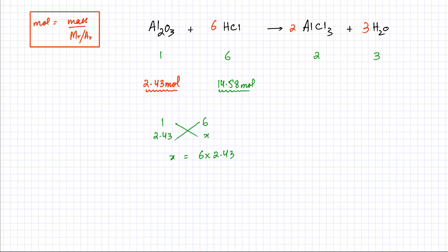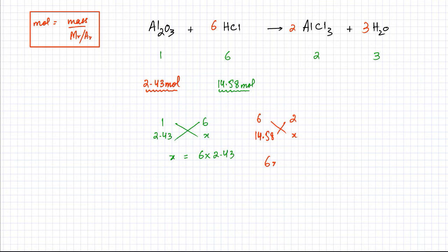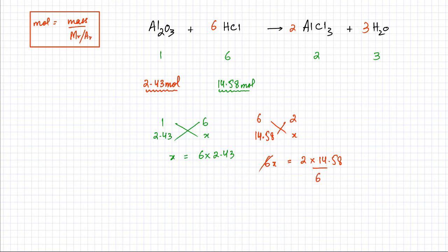Similarly, we can work out the moles of AlCl₃. Six molecules of HCl produce two molecules of AlCl₃, so the ratio is 6:2. If I have 14.58 moles of HCl, it will produce x moles of AlCl₃. Cross multiplying: 6x = 2 × 14.58, divide by 6. Using a calculator: 14.58 × 2 ÷ 6 = 4.86 moles of AlCl₃.